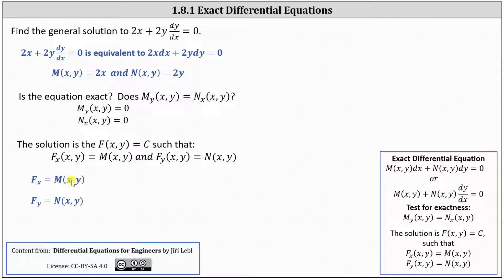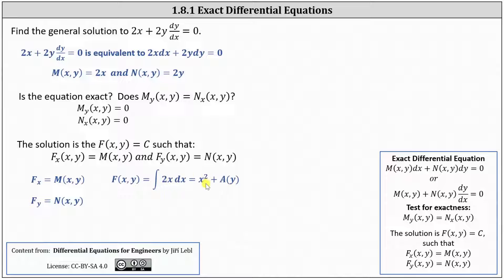We can start with either equation — let's start with the first. Integrating both sides with respect to x recovers most of F, but since we're integrating a partial derivative, instead of a constant we get a function of y. So F(x,y) equals the integral of 2x dx, which gives x² plus a function a(y). Now we'll use the second equation to recover all of F.